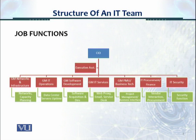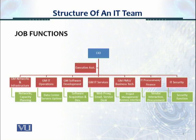The GM networks and infrastructure will look after networks and capacity planning. The GM IT operations will look after data center server uptime. The GM software development will look after software acquisition and development. The GM IT services will look after the web proxy, email, and the service desk. The GM PMU business technology will look after project management and the business interface with business departments. The IT procurement and finance department looks after vendor interaction and procurement functions. IT security looks after the entire IT information security function.